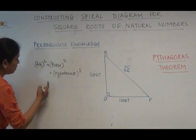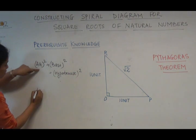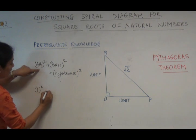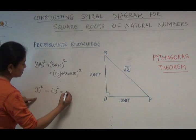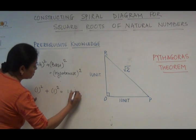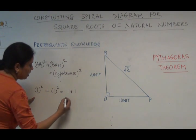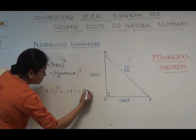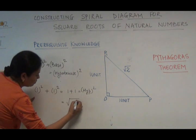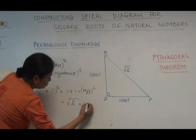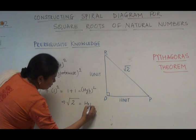the altitude square plus base square gives us the hypotenuse square. In this case, because we have altitude as 1, so we write 1 square. We have base as one unit also, so we write 1 square. So what does it give us? It is nothing but 1 plus 1, and this is hypotenuse square. If I have to find out the hypotenuse, I have to find the square root of 2 which is hypotenuse.